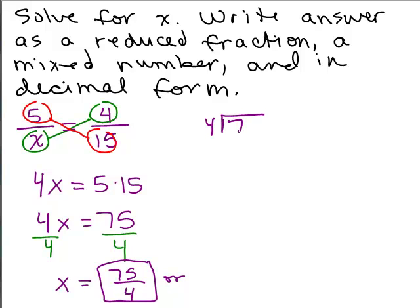But it says to also write as a mixed number. So how do you write that as a mixed number? You do 4 into 75, so we get 8 remainder of 3. So that's going to be 18 and 3 fourths. Remember the remainder? You put over what you divided by. So it's 18 and 3 fourths.